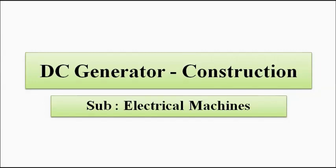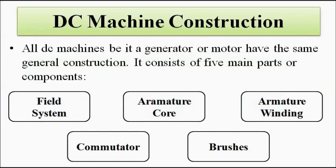The various important parts of the electrical machine — for the DC machine, be it motor or generator — it consists of five main parts. First, the field system, which provides the uniform magnetic field. Then the armature core and armature winding.